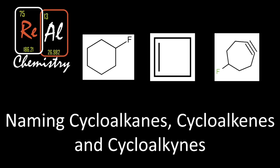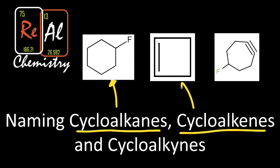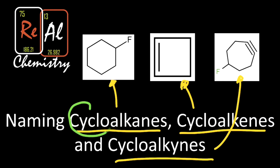Welcome to another episode of Real Chemistry, where we're going to talk about cyclic compounds — compounds that make ring structures — and we're going to learn how to name cycloalkanes, which are compounds with no double bonds. Cycloalkenes are ring structures that have at least one double bond, and cycloalkynes are ring structures that have a triple bond. We're going to learn to name all of those. One of the biggest differences is that we put 'cyclo' in front of our names to indicate that we have a ring structure.